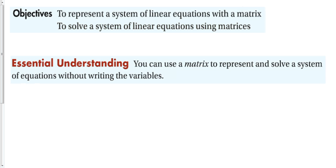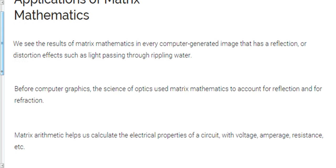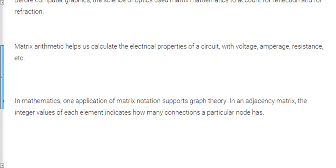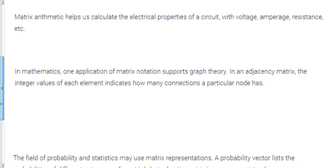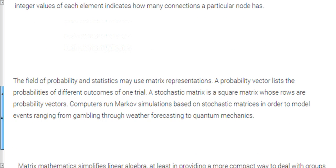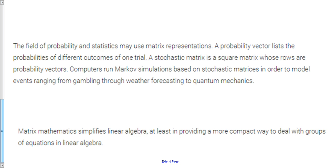You can use a matrix to represent and solve a system of equations without writing the variables, and these have a lot of practical applications. We see the results of matrix math in every computer-generated image that has a reflection or distortion, such as light passing through rippling water. Optics uses matrix math, it helps calculate electrical properties of a circuit including voltage, amperage, and resistance. It also supports graph theory — in an adjacency matrix, integer values show how many connections a particular node has. We use it in probability and statistics as well.